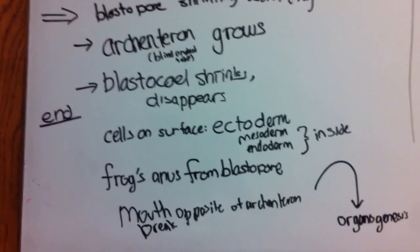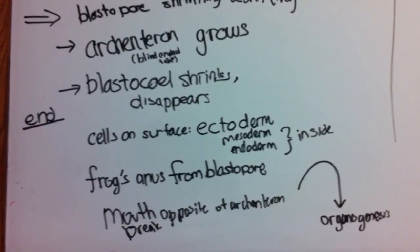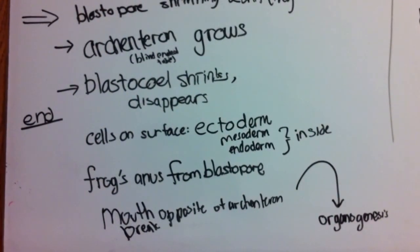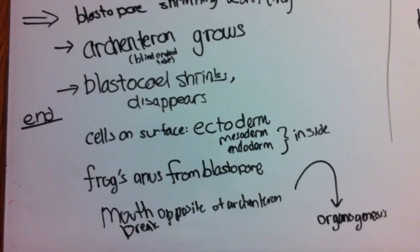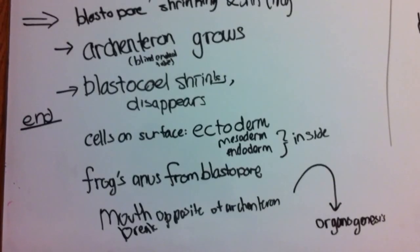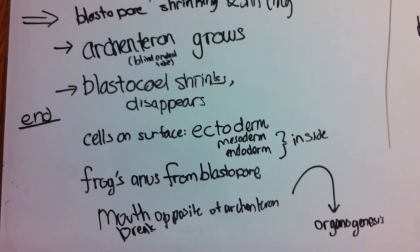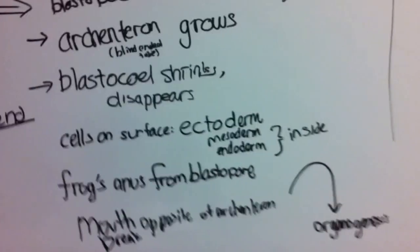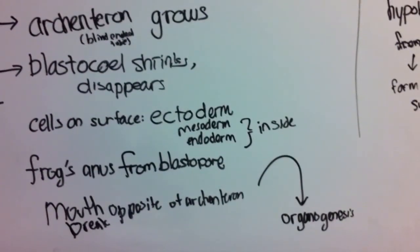As we reach the end of gastrulation, the cells on the surface will represent the ectoderm, while the mesoderm and endoderm will be on the inside. The frog's anus forms from the blastopore and the mouth breaks from the opposite of the archenteron. This gets us ready for our setup in organogenesis.